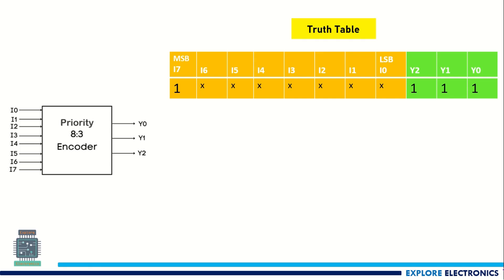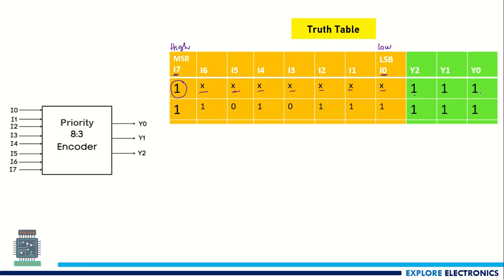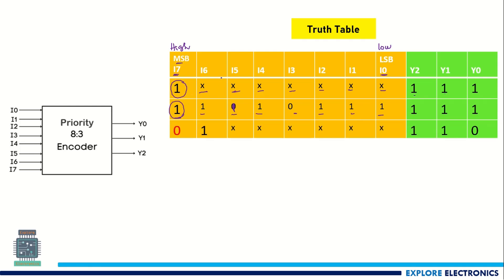This is the truth table of the 8-to-3 priority encoder. Here i7 is the MSB with the highest priority, and i0 is the LSB with the lowest priority. If there is a 1 at the MSB, we are not going to look at all other values — those values can be 0 or 1 — the encoded output will be 111. If any combination has i7 equal to 1, the highest priority is given to the MSB, so irrespective of other values the encoded output will always be 111.